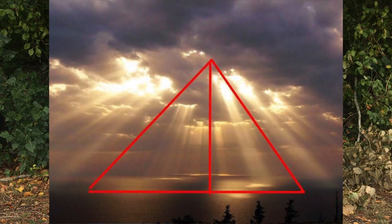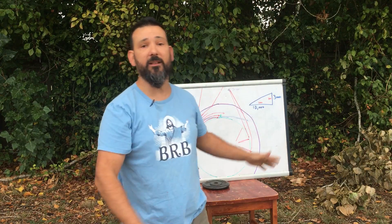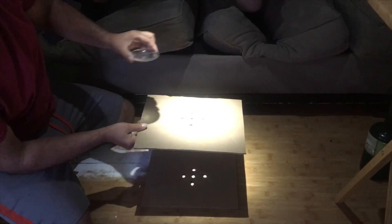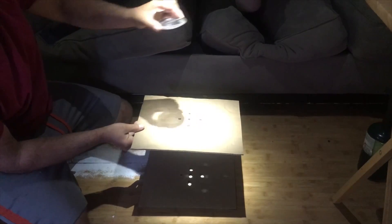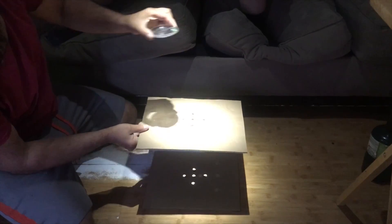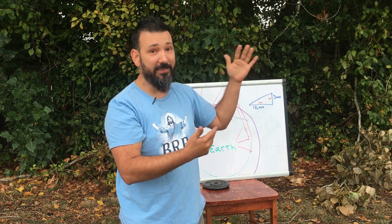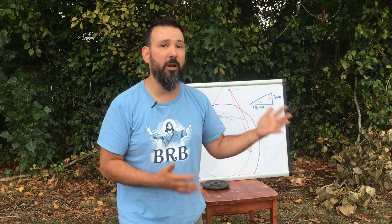Crepuscular rays — flat earthers say these demonstrate a flat earth because there's no way the sun could be 93 million miles away and splay the light out like that. Theoretically, I understand what they're saying. But I've demonstrated that light rays are straight right where they're supposed to be until you introduce a lens between the sun and the clouds, and then the light splays. The curvature or lensing of the atmosphere actually causes the splaying. This is demonstrated by science. I'm not just using logic and reasoning — I'm demonstrating what I'm saying by what we can see, test, and demonstrate.